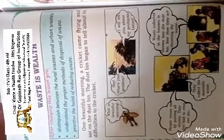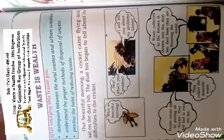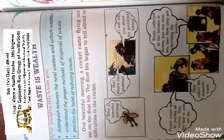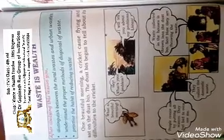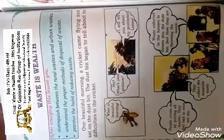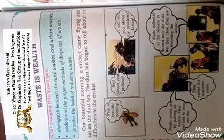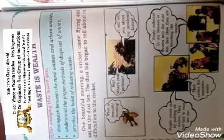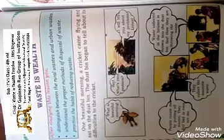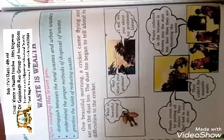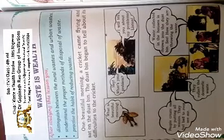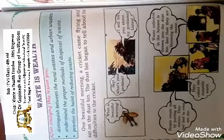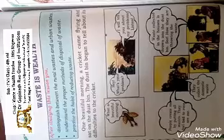Waste is a very comfortable place for cockroaches and rats. Waste contains many things like plastic, tin, rubber, fruits and vegetable waste, etc. Some things will decay and some things will not decay. For example, vegetables and fruits will decay. But plastic, rubber, and tin will not decay.